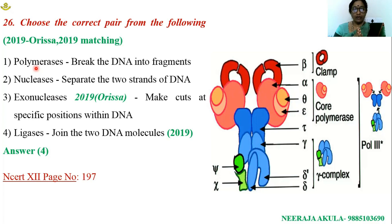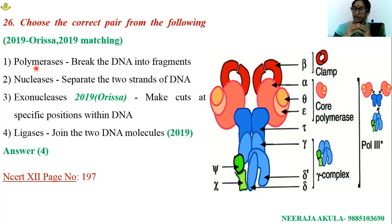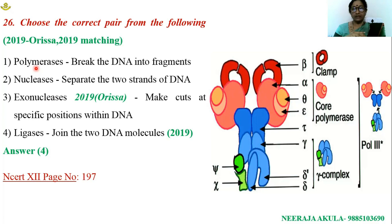DNA polymerase I is involved in the process of polymerization and also possesses exonuclease activity. The exonuclease activity of DNA polymerase I is more pronounced, and it is involved in the removal of wrong base pairs during replication. The exact function of DNA polymerase II is not known, but it is considered a backup enzyme and is also involved in the synthesis of the lagging strand.